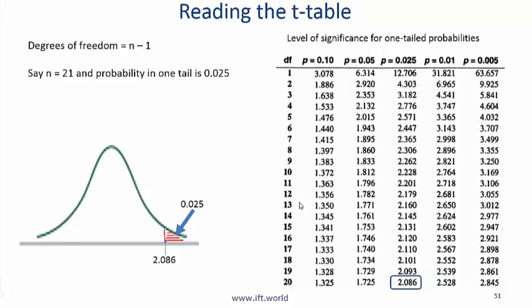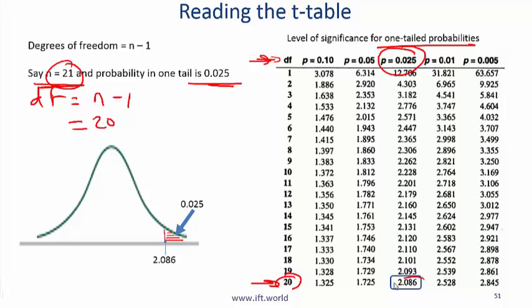I have talked about reading the z table. Let's also talk about reading the t table. Let's say that you are given n equals 21. The first thing to recognize is that degrees of freedom equals n minus 1. So degrees of freedom will be 20. And then let's say that you are told that the probability in one tail is 0.025. Then what do you do? So if you are given one tail probabilities, this is 0.025. So notice that here the probabilities on the t table are given right here. On a z table, the probabilities were in the middle. So there's a difference between z and the t table. You read up, you look up the degrees of freedom and this is your answer.